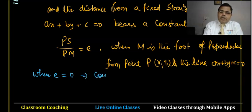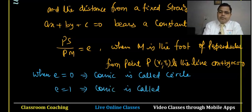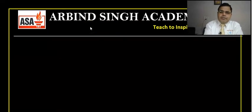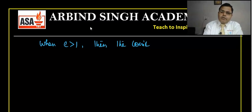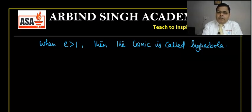So PS/PM = e. Now when e = 0, the conic is called a circle. When e = 1, the conic is called a parabola. When e < 1, the conic is called an ellipse. And when e > 1, the conic is called a hyperbola.